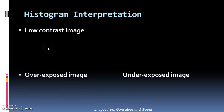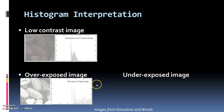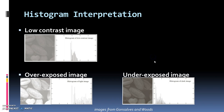Now how is the histogram helpful in interpreting the image? For a low contrast image, all the pixels are bunched together. In an overexposed image, there is a lot of light so all pixel values are concentrated toward the higher side — approximately pixel values 4 to 7. In an underexposed image there is no light, so all pixels are bunched toward the lower side. Just by looking at the histogram we can interpret the quality of the image.